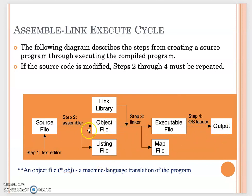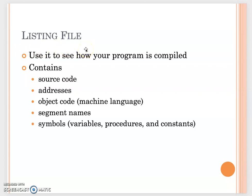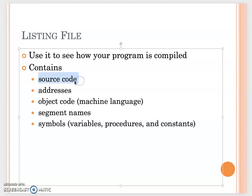After you understand each step, let's focus on the listing file. What is the listing file? As mentioned earlier, the .obj file or .exe file cannot be viewed by the user because they are binary files. But the listing file, just like your source file, is a text file, so you can use it to see how your program was compiled. The listing file contains some information: it has the source code, which comes from the .asm file.